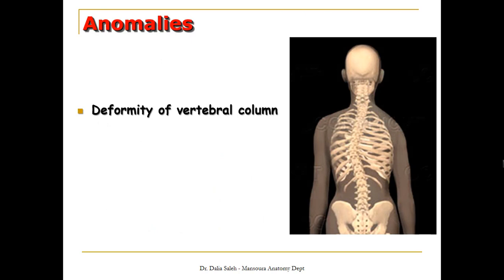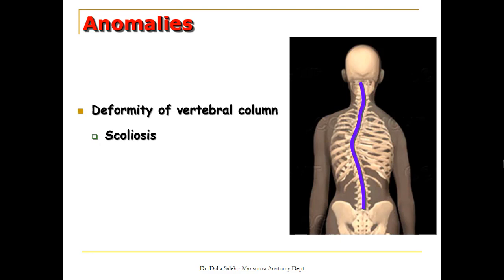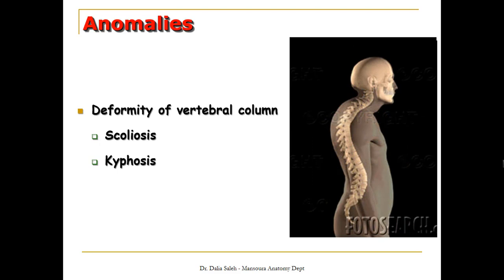Because of the hemivertebra, we end up with bending or deformity of the vertebral column. Lateral kinking or lateral bending of the spine is called scoliosis. An exaggerated thoracic curve is called kyphosis.